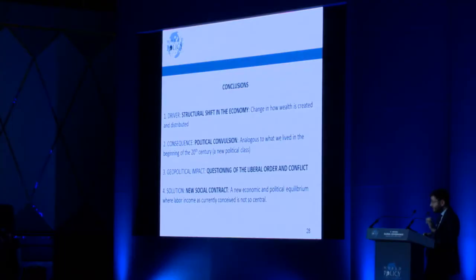The driver of what we're seeing is a big structural shift in the structure of the economy — in the way wealth is generated and distributed. This is producing a political convulsion of which we're only seeing the beginning. It's going to have geopolitical consequences: the weakening of the EU, NATO, and the global trading regime. The solution will require something resembling a new social contract. The period is similar to the beginning of the 20th century, with a new political class emerging — at the time it was the proletariat; in our time it's the precariat: the underemployed, sub-employed, precariously employed people. The big question is how do we build a new equilibrium?